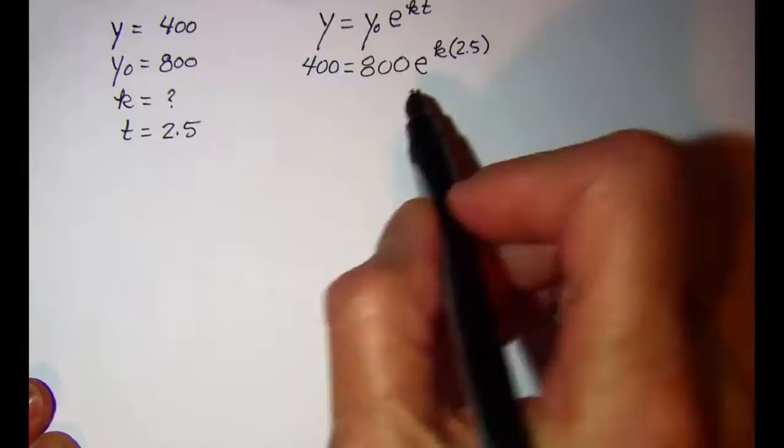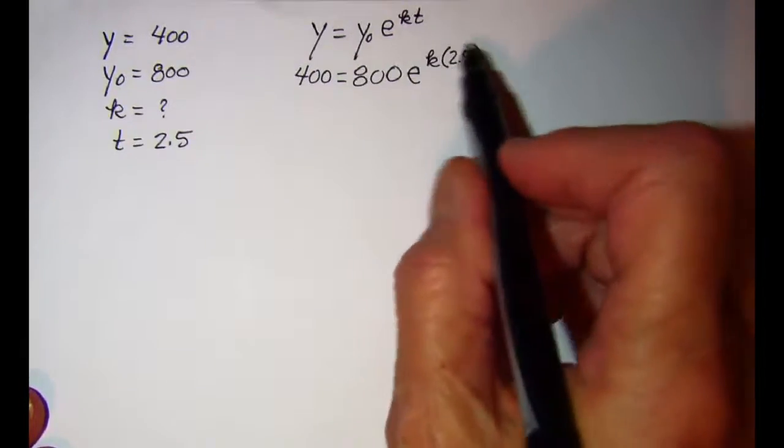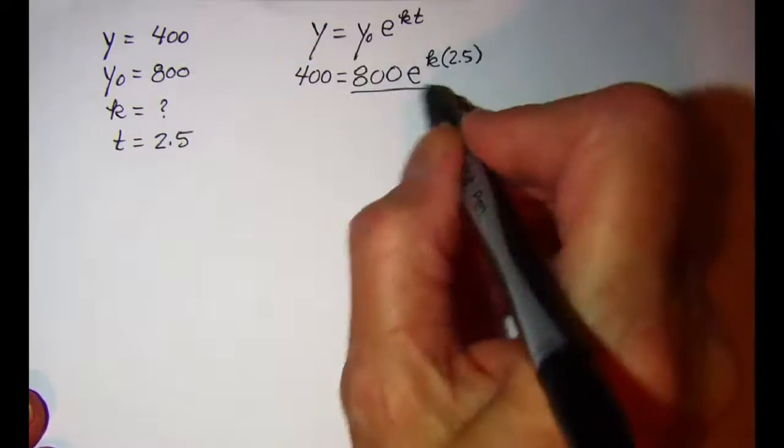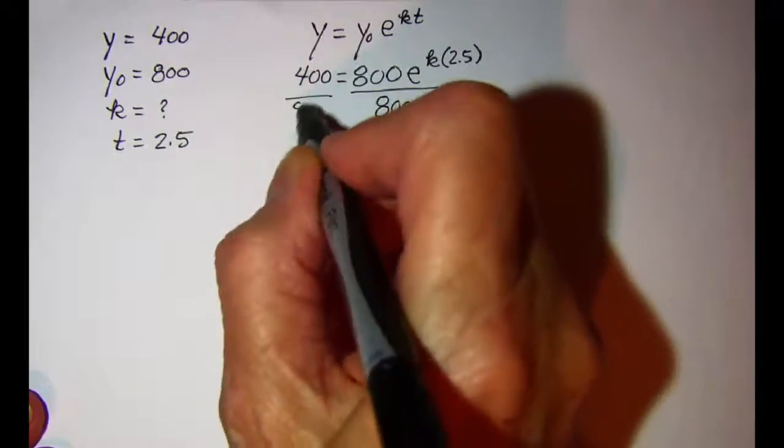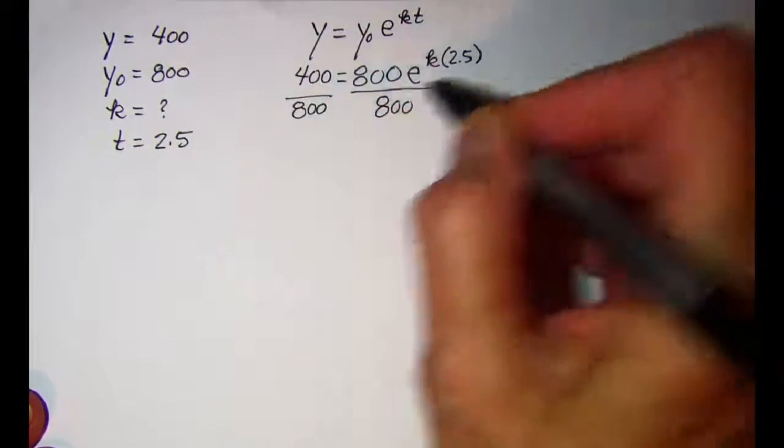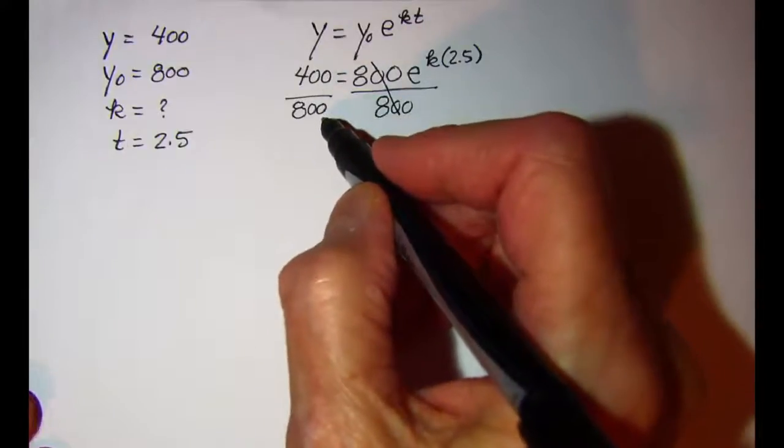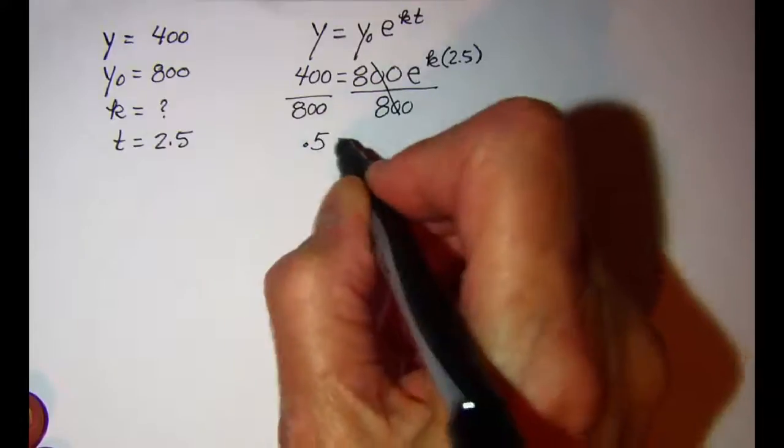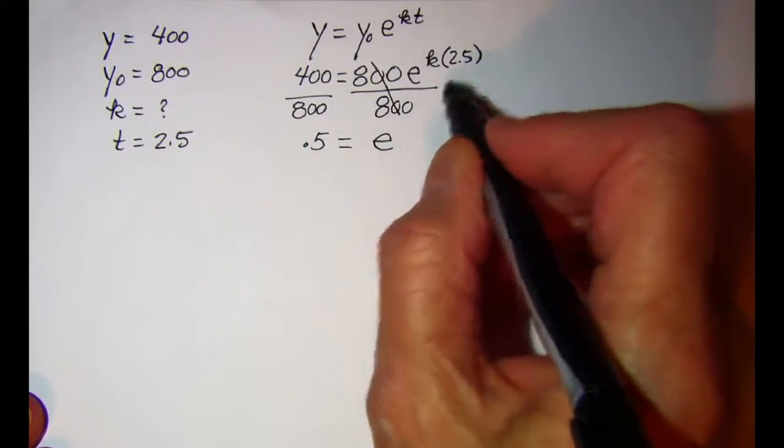We need to isolate our factor with the k in it so we're going to divide by 800 and these cancel. So 400 divided by 800 is one half or 0.5 and I'm going to write this as 2.5k.